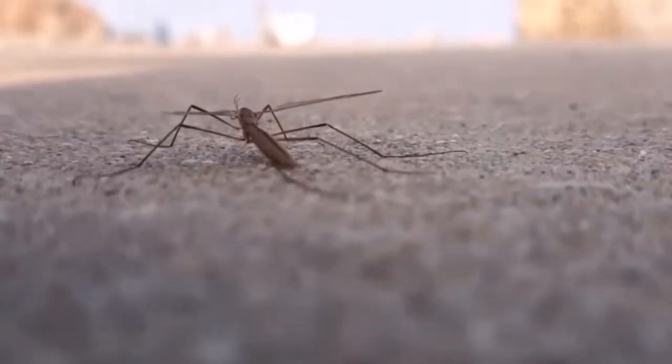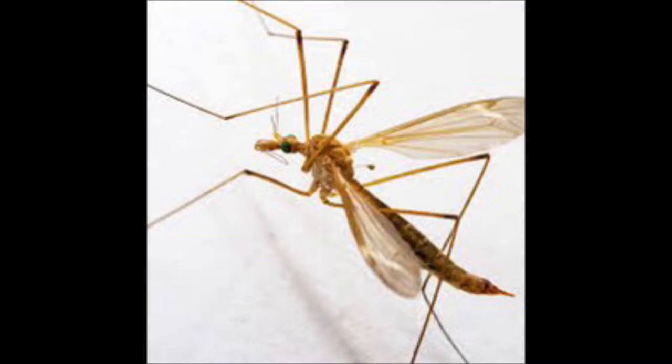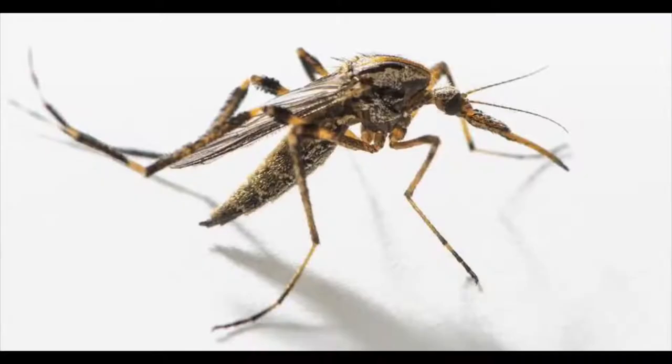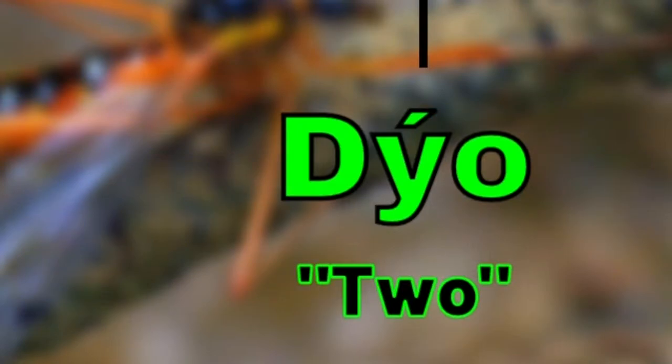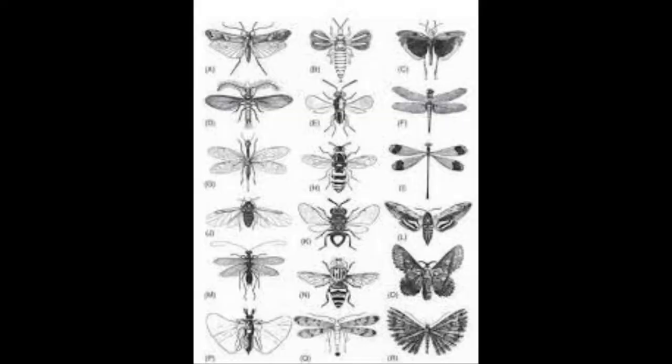Crane flies, as their name suggests, are flies. They are often mistaken for big mosquitoes, which by the way are also flies. Crane flies, like all flies, belong to order Diptera. The name Diptera is composed of two Greek words: 'di' meaning two, and 'ptera' which means wing — implying that they have two wings. This is a pretty unique wing number for insects, because insects generally have four wings.